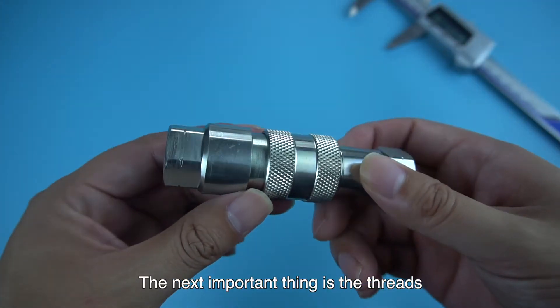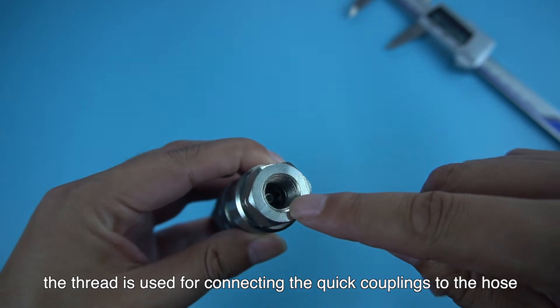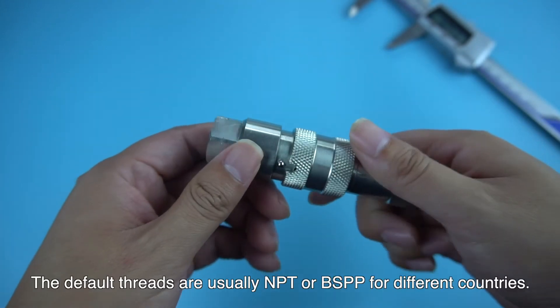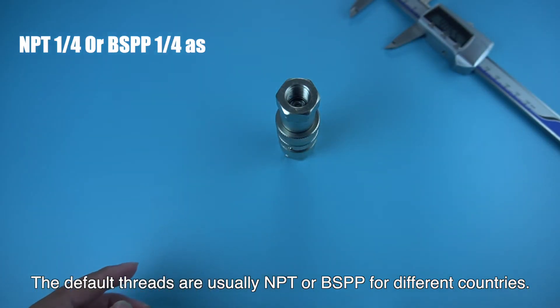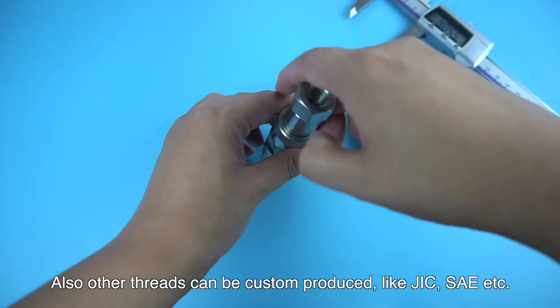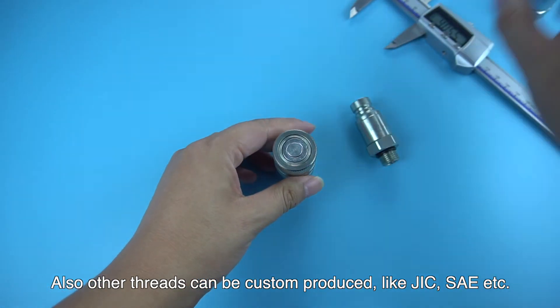The next important thing is the threads. The threads are used for connecting the quick couplings to the hose and the machinery. The default threads are usually NPT or BSBP for different countries. Also other threads can be custom-produced like JIC, SAE, etc.